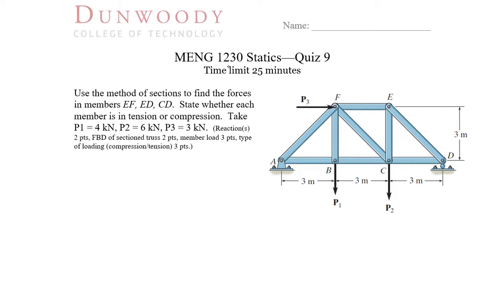The solution to Mechanical Engineering Statics Quiz 9 at Dunwoody College of Technology, Fall 2018. We're asked to use the method of sections to find the internal forces in members EF, ED, and CD, and to state whether those are in tension or compression. We're given the loads on the truss as P1 acting down at 4 kilonewtons, P2 acting down at C at 6 kilonewtons, and P3 acting to the right at F at 3 kilonewtons.